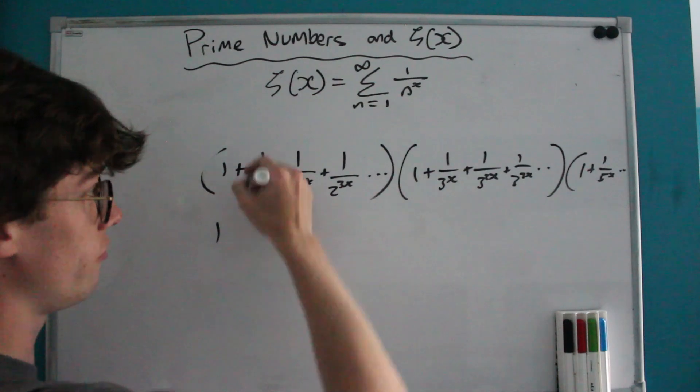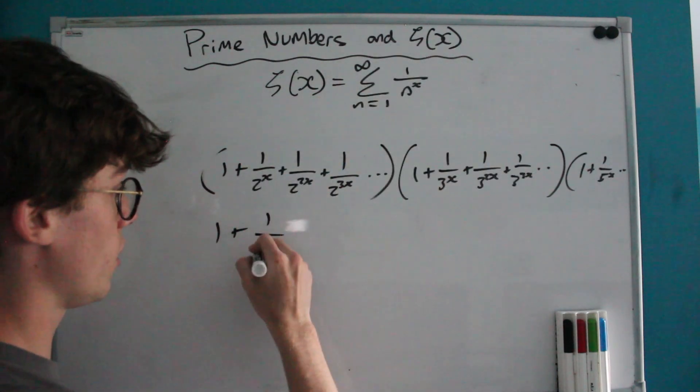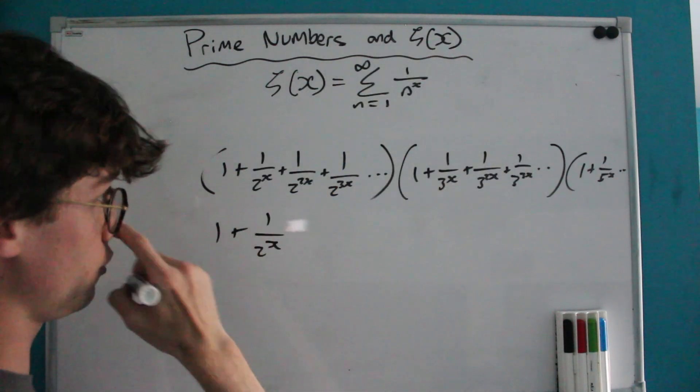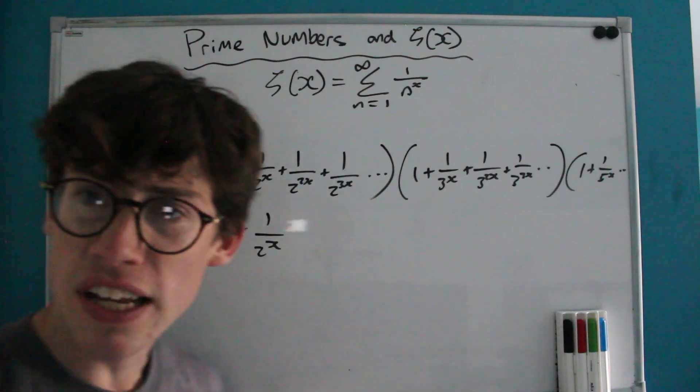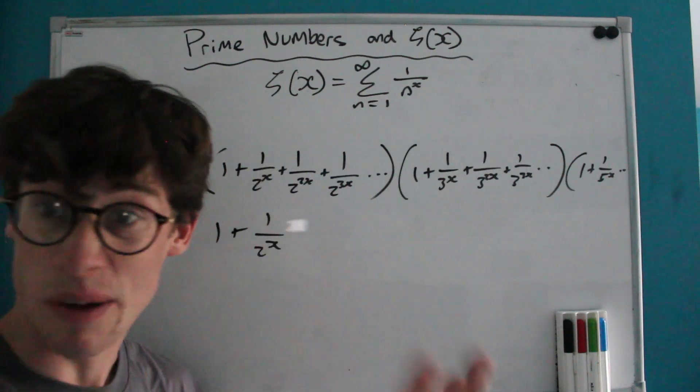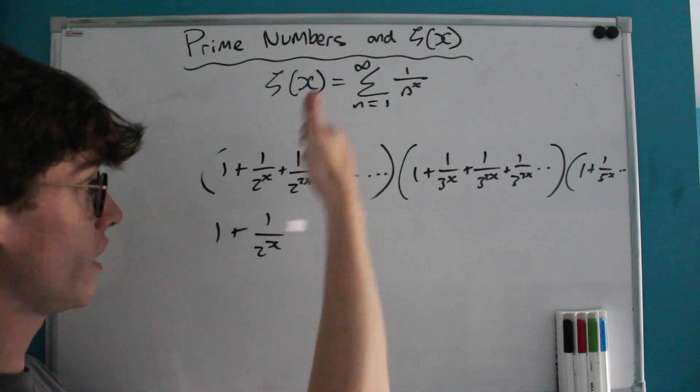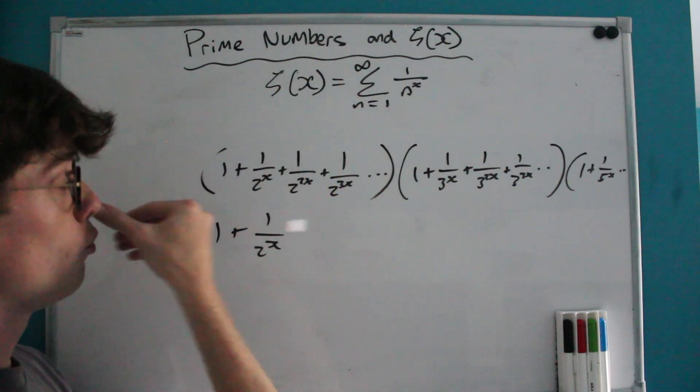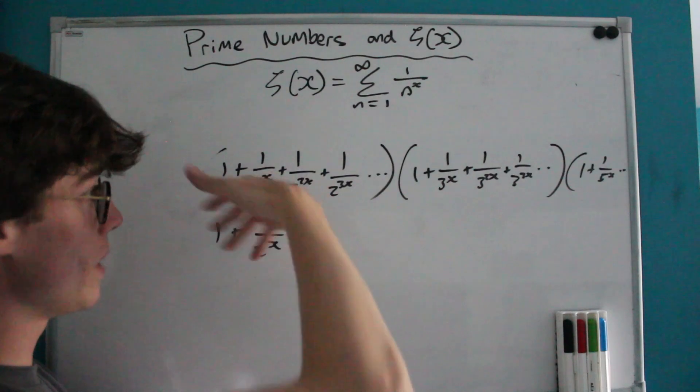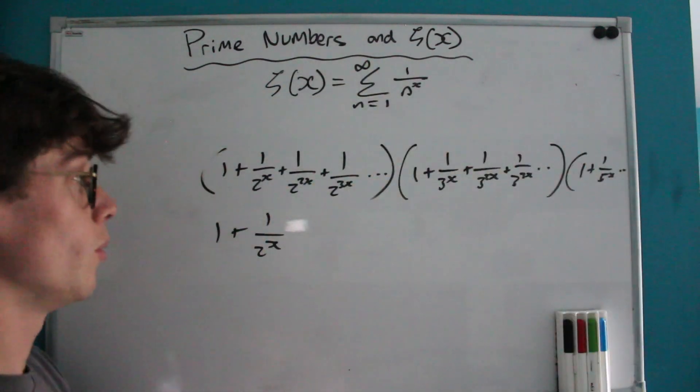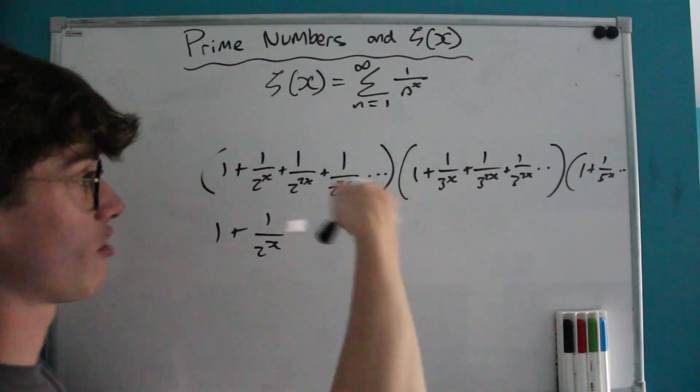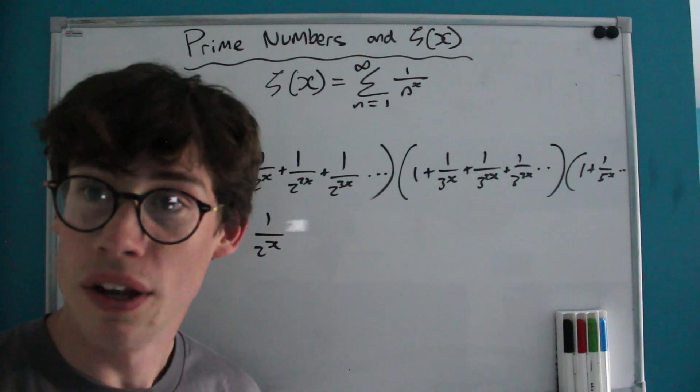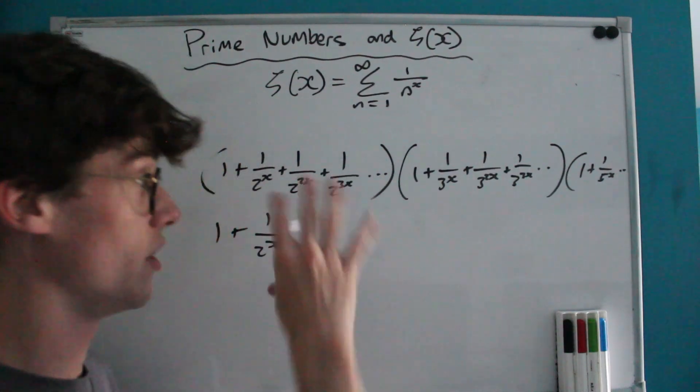Well our ones will multiply nicely to make a 1. We would also have just a 1 over 2 to the x and every single number that is just a power of 2 to the x so 1 over 2 to the x or 1 over 4 to the x or 1 over 8 to the x will be captured in our products when it multiplies by a 1. So we will of course have 1 over 2 to the 2x when it multiplies by each of the ones that we have at the start of each of our other sums in this product.